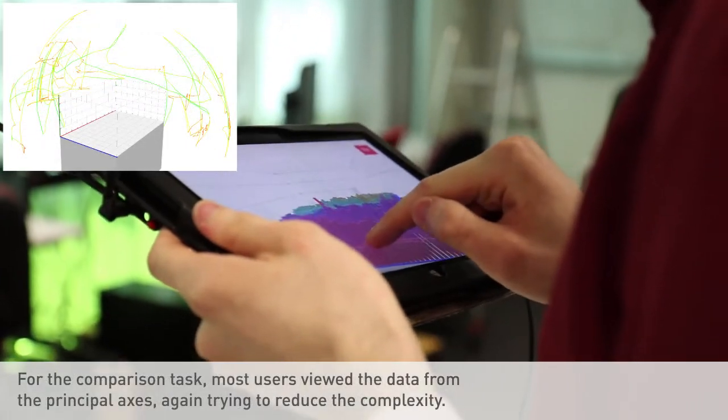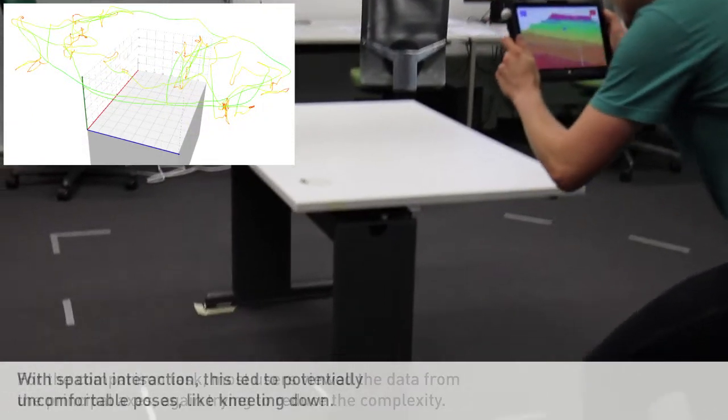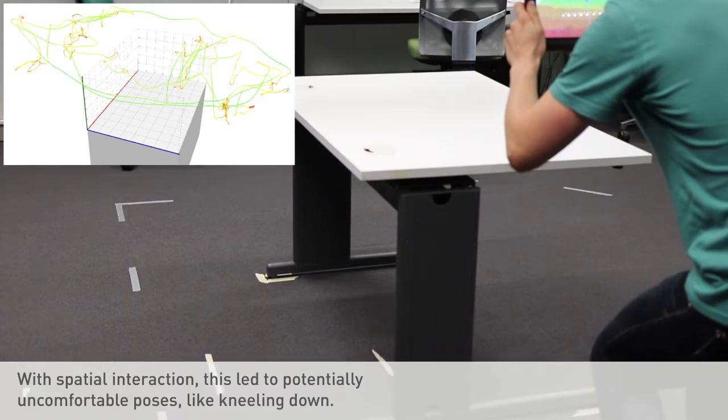For the comparison task, most users viewed the data from the principal axis, again trying to reduce the complexity of the task. With spatial interaction, this led to potentially uncomfortable poses like kneeling down.